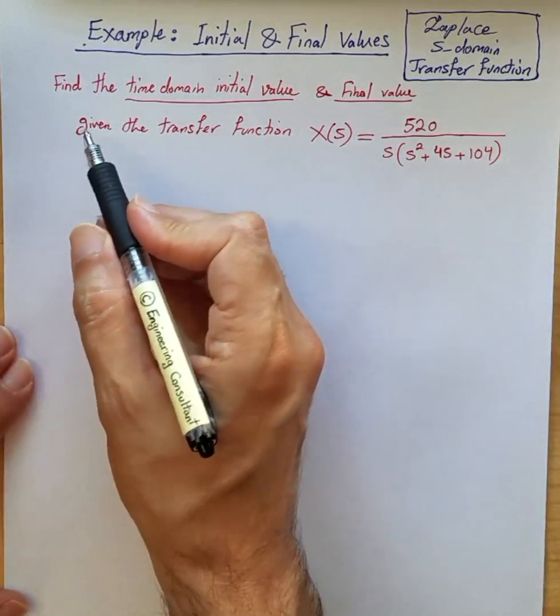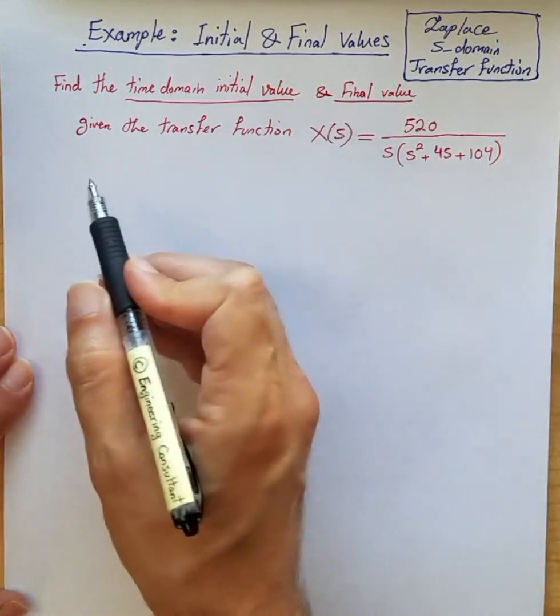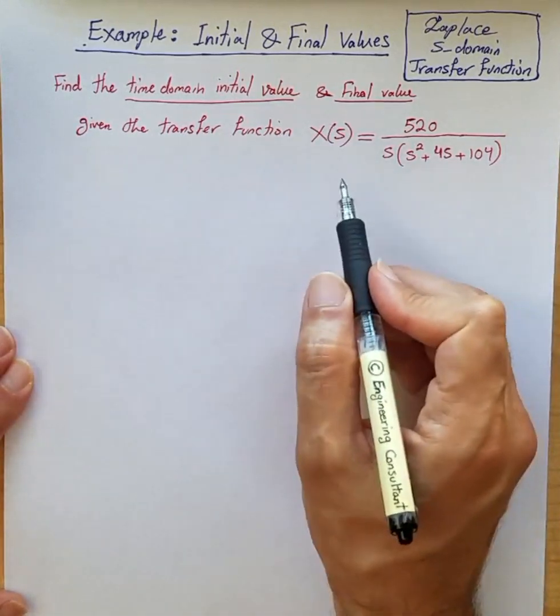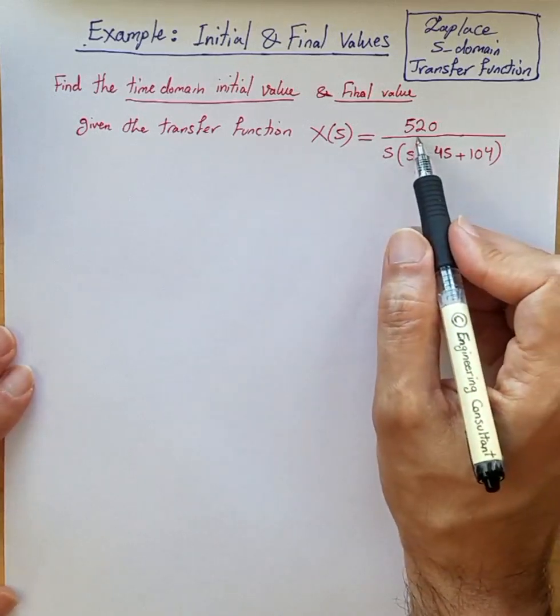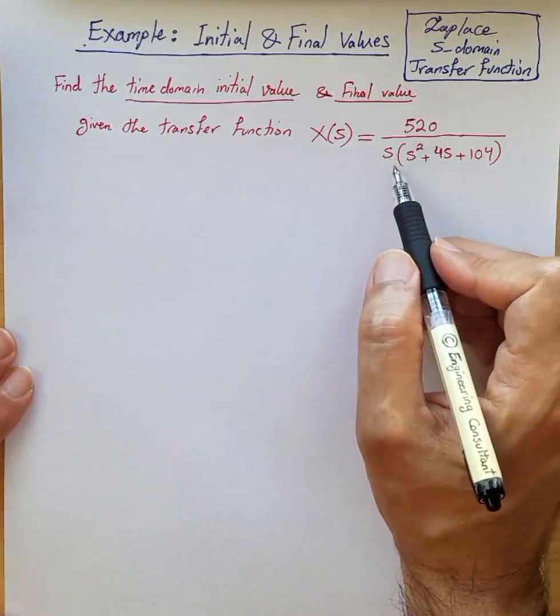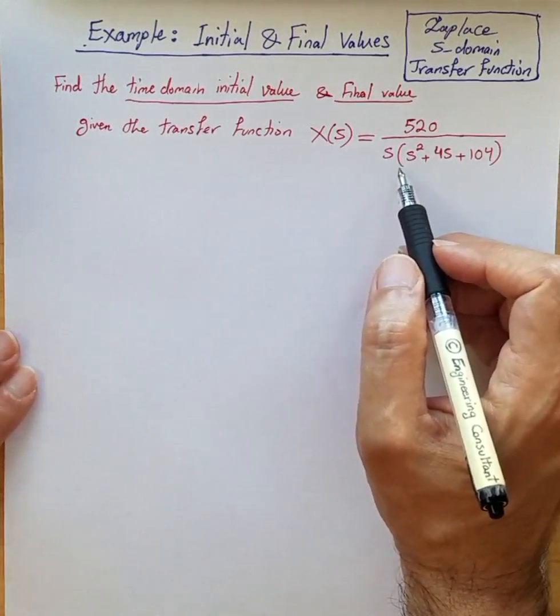So the question is, find the time domain initial value and final value for this given transfer function X(s) in S domain with numerator 520 and denominator as shown here. It's a third order polynomial in the denominator.